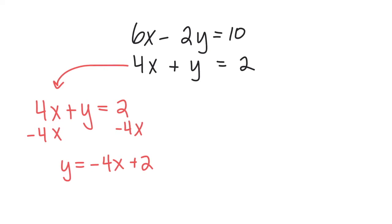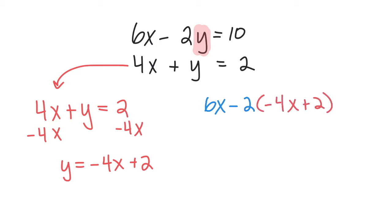Now I'm going to take the equation I just found and substitute it into the top equation where the y is. So that will be 6x minus 2, but instead of y we write negative 4x plus 2, and keep going with the equation — so equals 10. Now let's solve this for x.